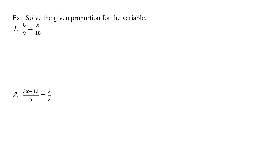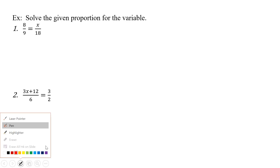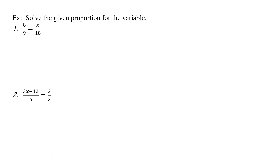Let's look at some more examples for this section. We're going to solve the given proportion for the variable. All we really do is the cross product, as we talked about last time — we take that times that, set it equal to that times x. So we take 8 times 18 equals 9 times x.